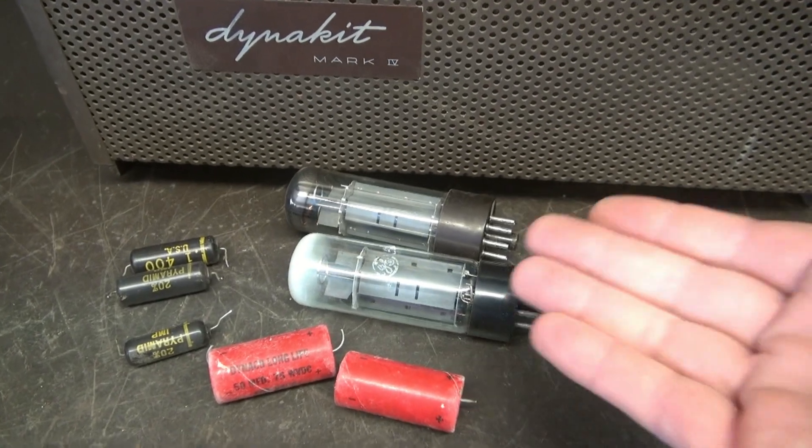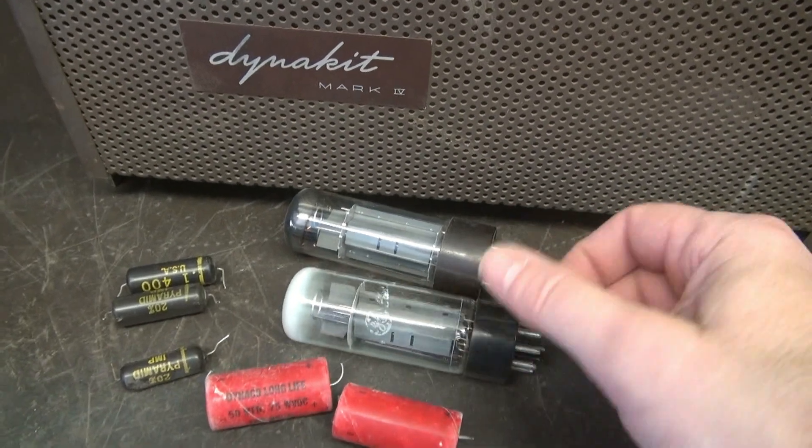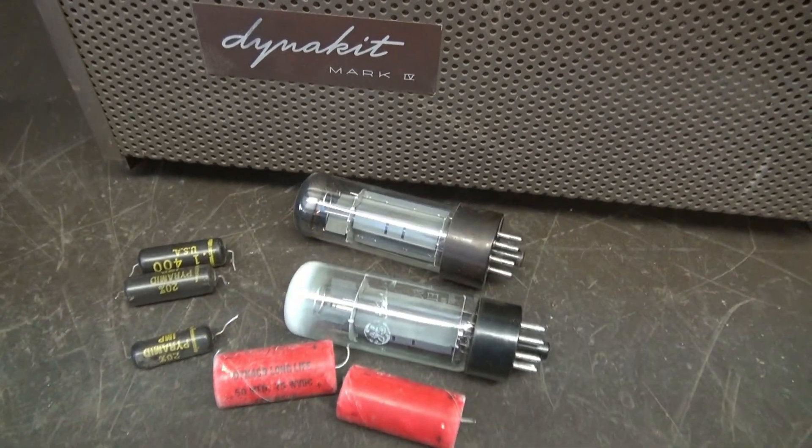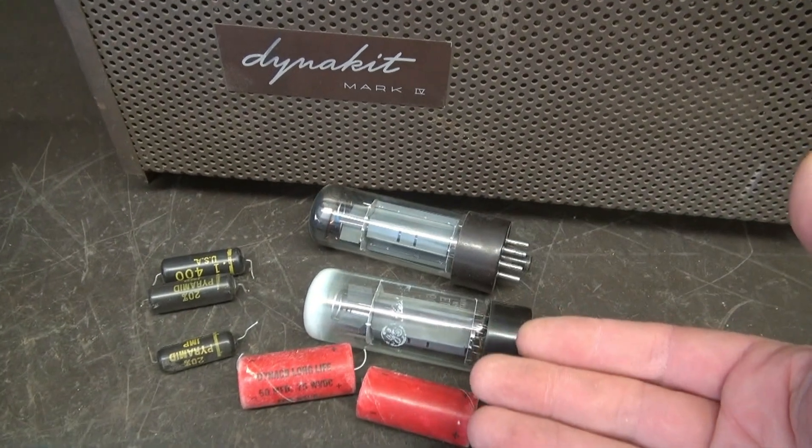So here are the fallen soldiers from the Dynakit Mark IV. A couple bad tubes, a few bad caps. Except for the price of the tubes, this was a fairly inexpensive repair.